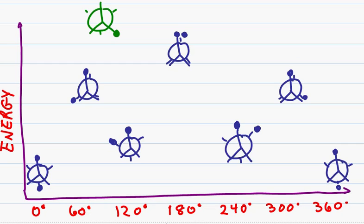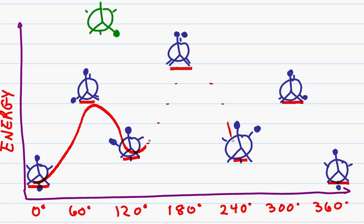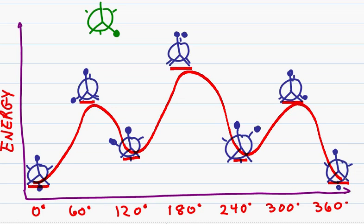If I want to show just the energy on the diagram without the structures, I put my anti at the lowest position and full eclipse at the highest. I put staggered gauche slightly higher than the anti-position and methyl-to-hydrogen eclipse slightly lower than my total eclipse. Then I connect this with a curve, and here you have the energy diagram for butane.